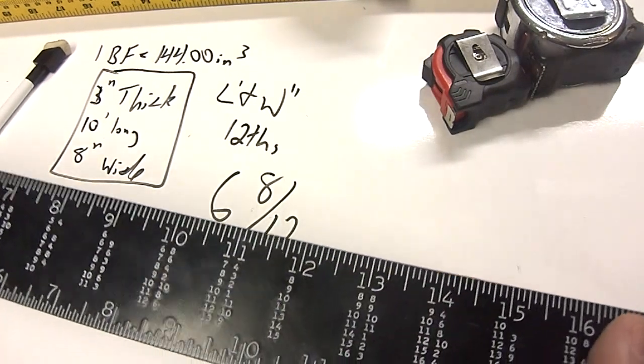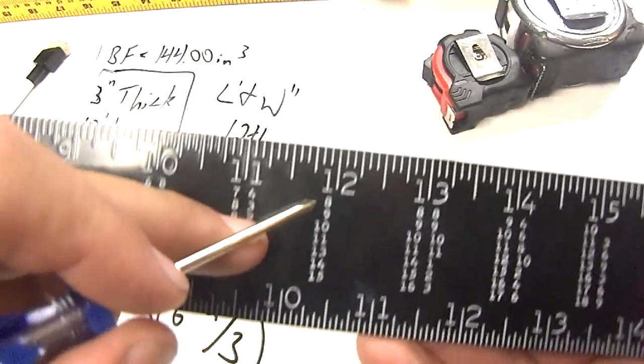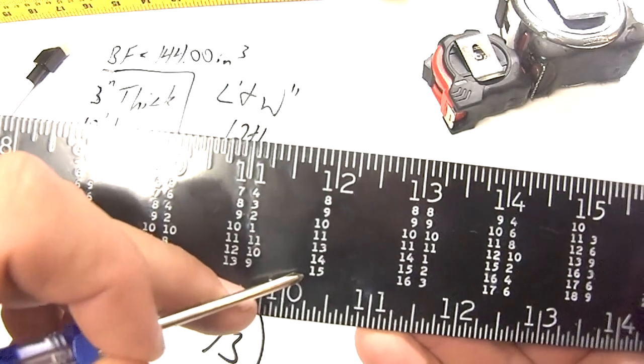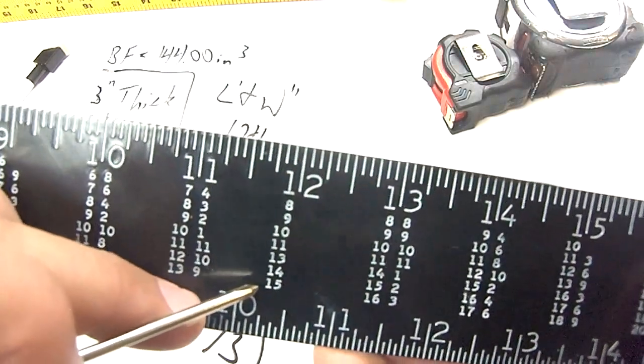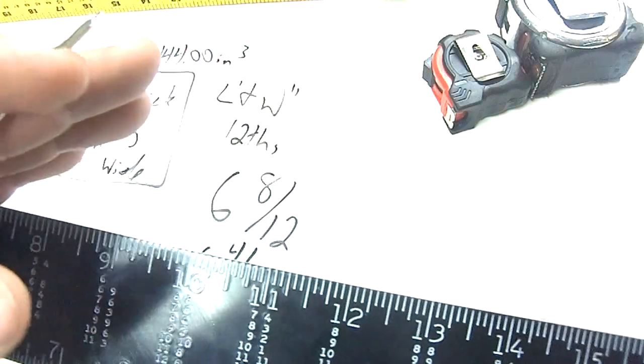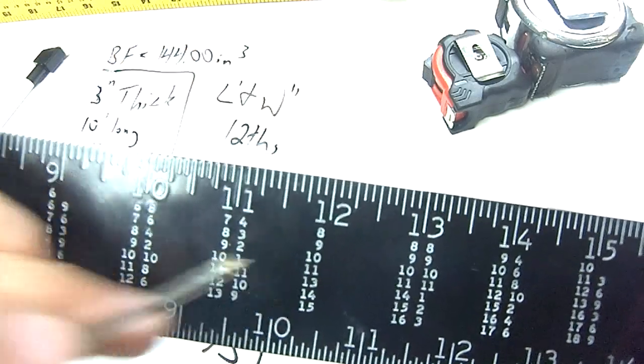But what if you have a board that is outside of this dimension here? What if you have a board that is 30 feet long, and you need to figure out that calculation? Well, it's pretty simple. You just break that board down into smaller pieces so you can still use your scale.